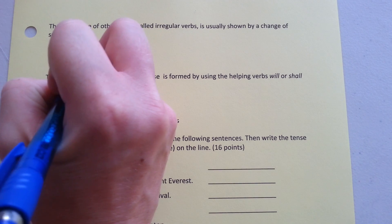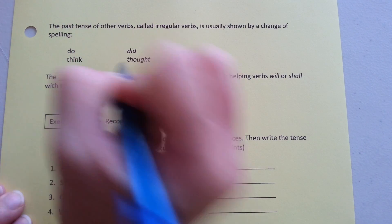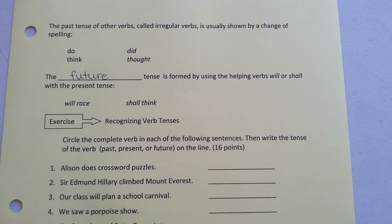The future tense is formed by using the helping verbs will or shall with the present tense. For example: will race, shall think.